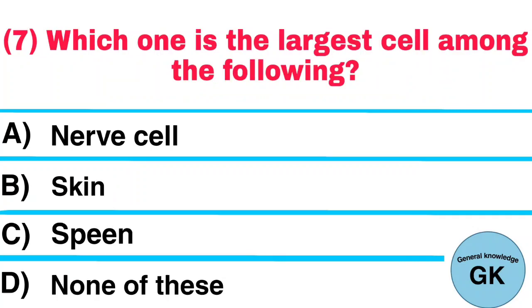Question number 7. Which one is the largest cell among the following? A. Nerve cell. B. Skin. C. Spleen. D. None of these. Answer: Nerve cell.